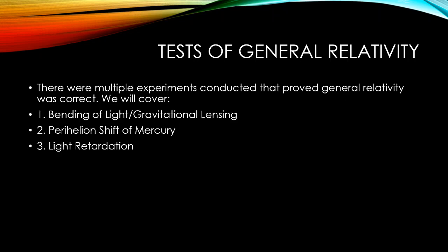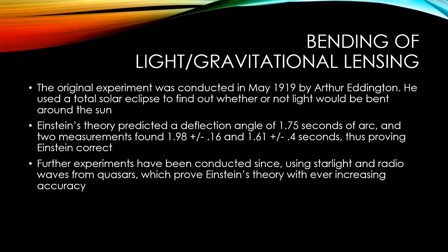Multiple experiments were conducted that proved general relativity was correct. The bending of light, or gravitational lensing, was conducted in May 1919 by Arthur Eddington. He used a total solar eclipse to find out whether light would be bent around the sun. Einstein's theory predicted a deflection angle of 1.75 seconds of arc, and two measurements found 1.98 ± 0.16 and 1.61 ± 0.4 seconds, thus proving Einstein correct. Further experiments using starlight and radio waves from quasars have further proved Einstein's theory with ever-increasing accuracy.